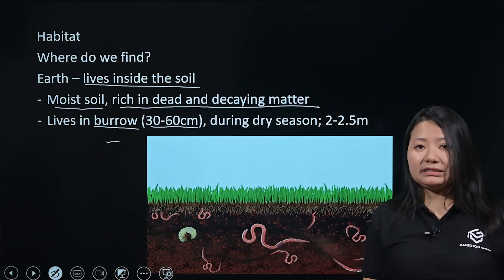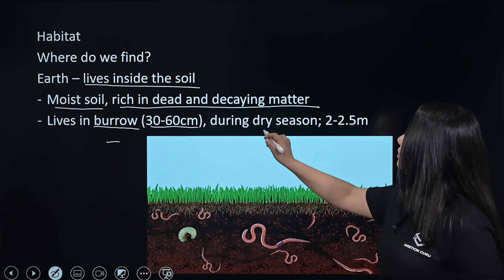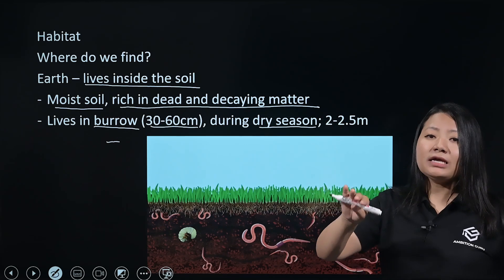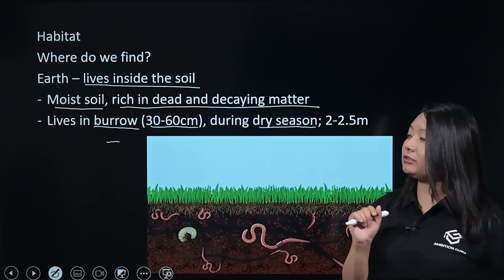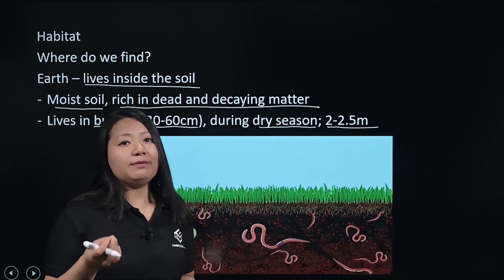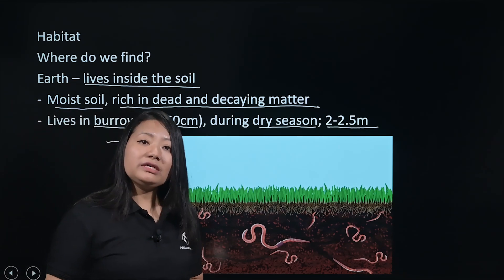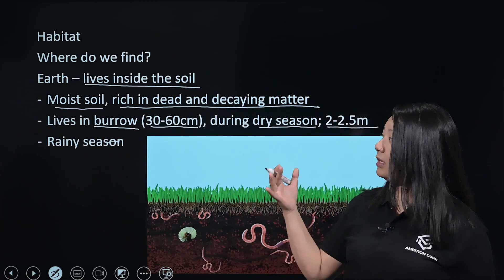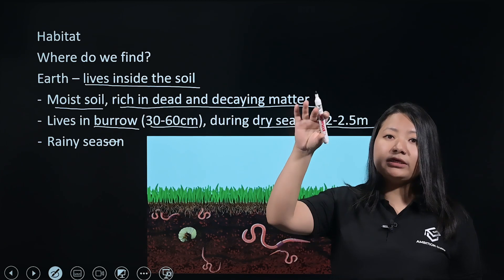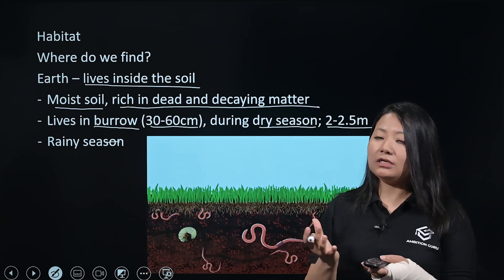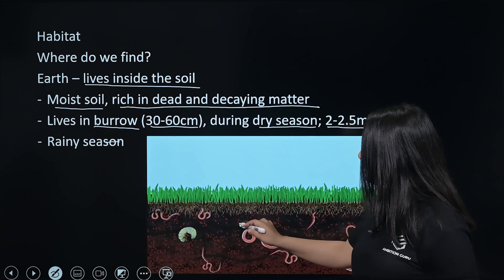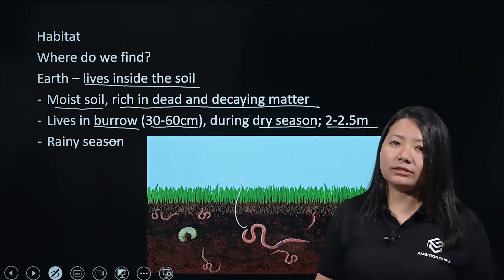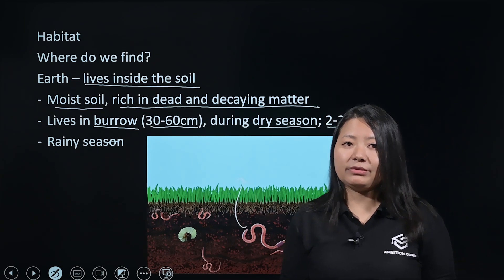During the dry season, in search of moisture, the Earthworm goes deeper — the burrow can reach up to 2 to 2.5 meters in depth. During the rainy season, the burrows get filled with water, so the Earthworm comes out of the soil. That is why during the rainy season we can see Earthworms outside the soil.